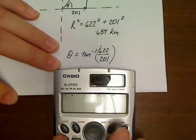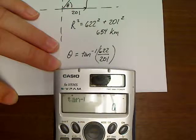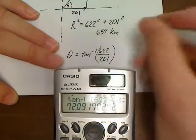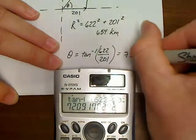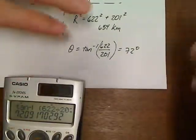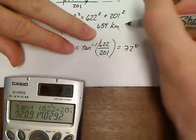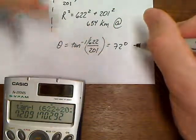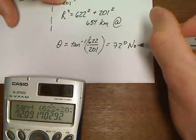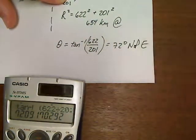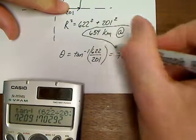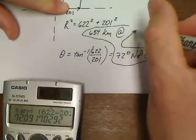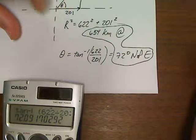And then, shift tan of 622 divided by 201 is 72 degrees. So this would be 654 kilometers at 72 degrees north of east. So here is our complete answer.